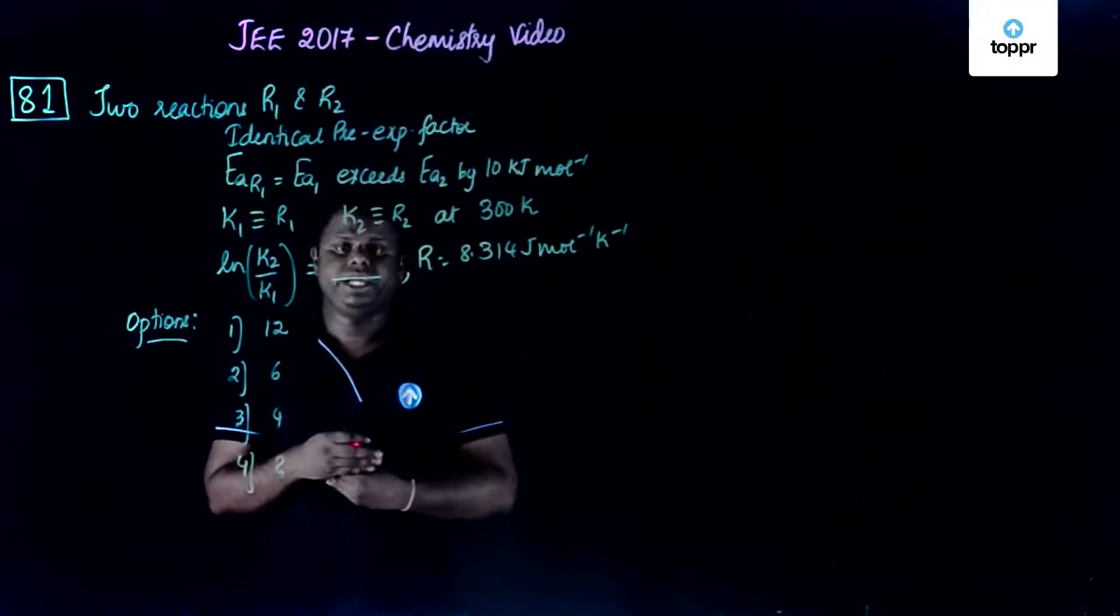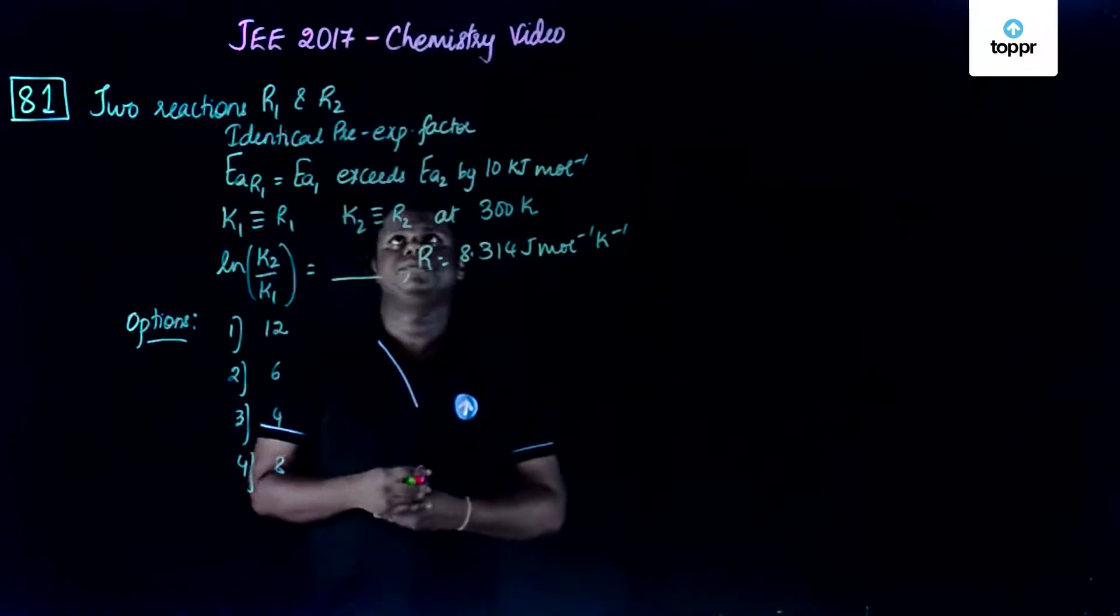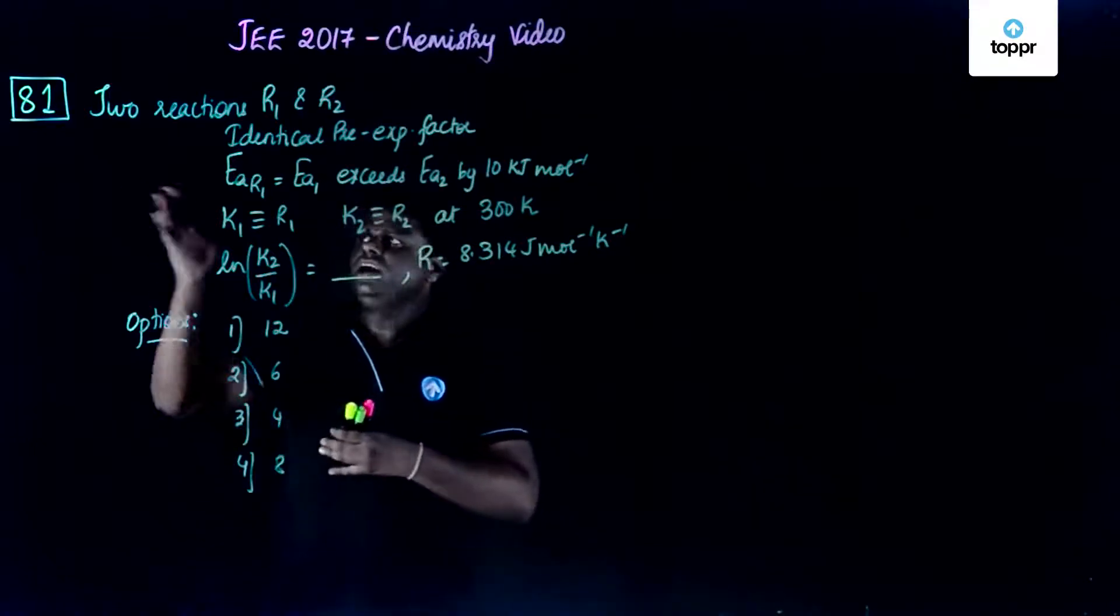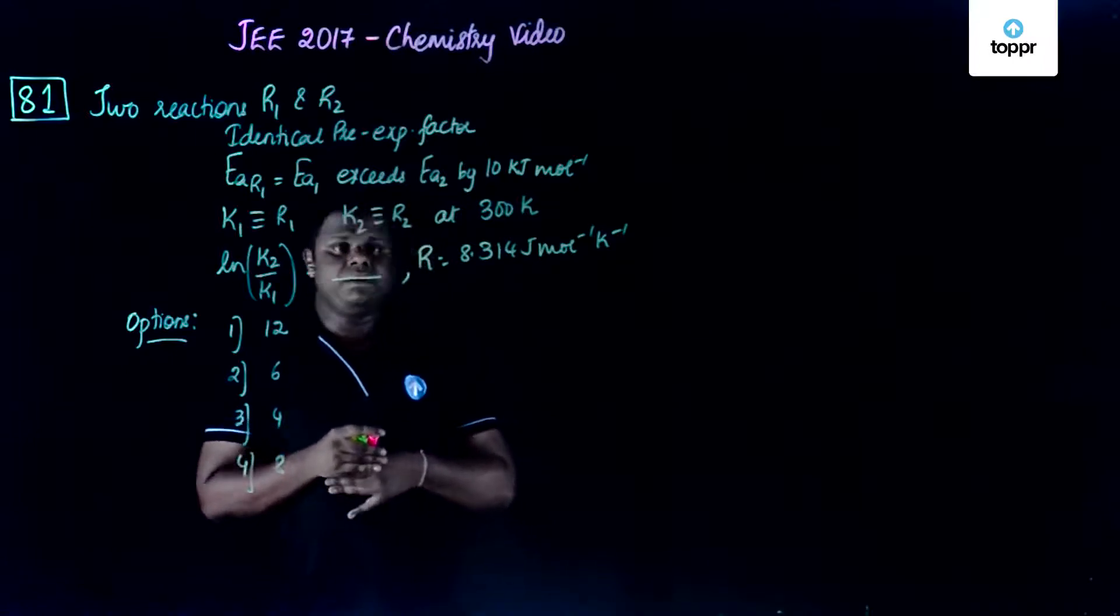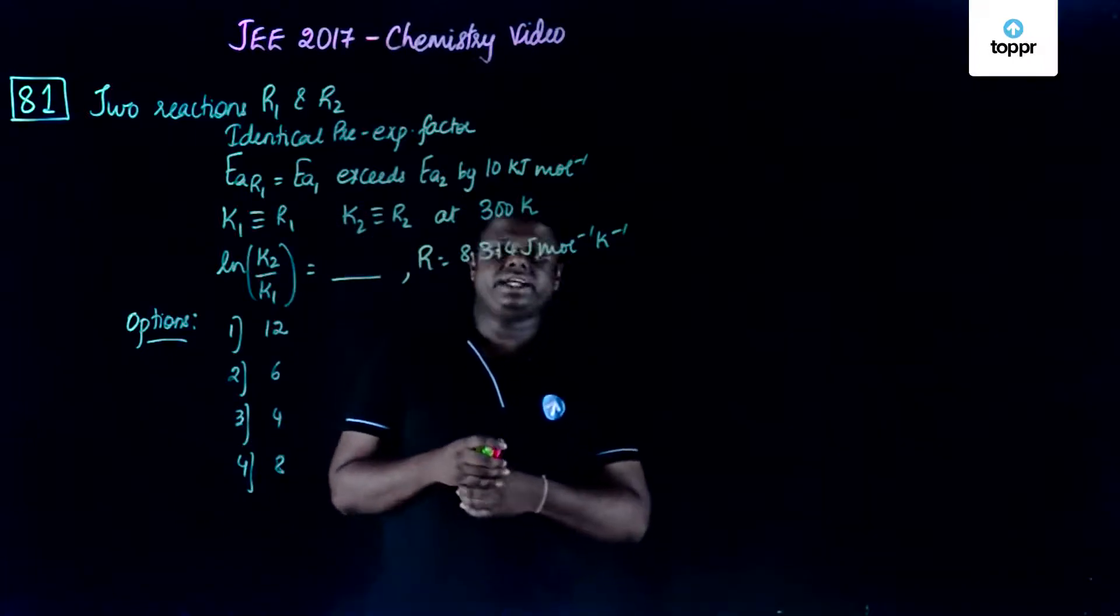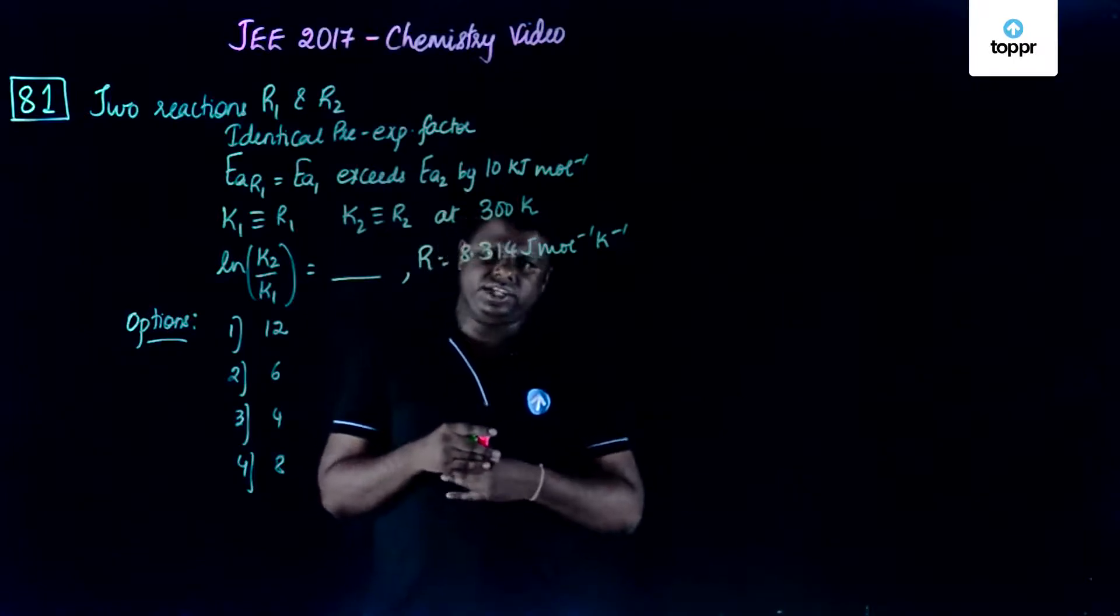Now let's begin with question number 81 of the JEE paper 2017 code D. We are going to discuss this reaction which is based on chemical kinetics, the final part of the chapter: activation energy and Arrhenius equation.